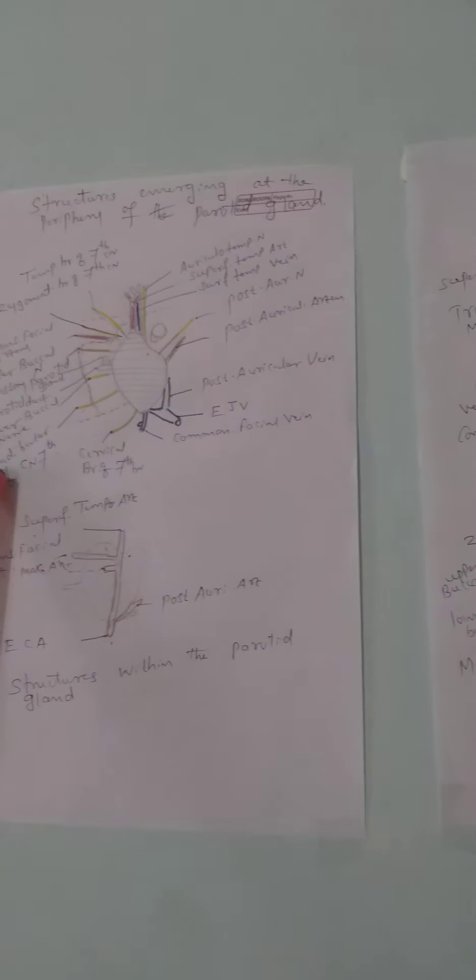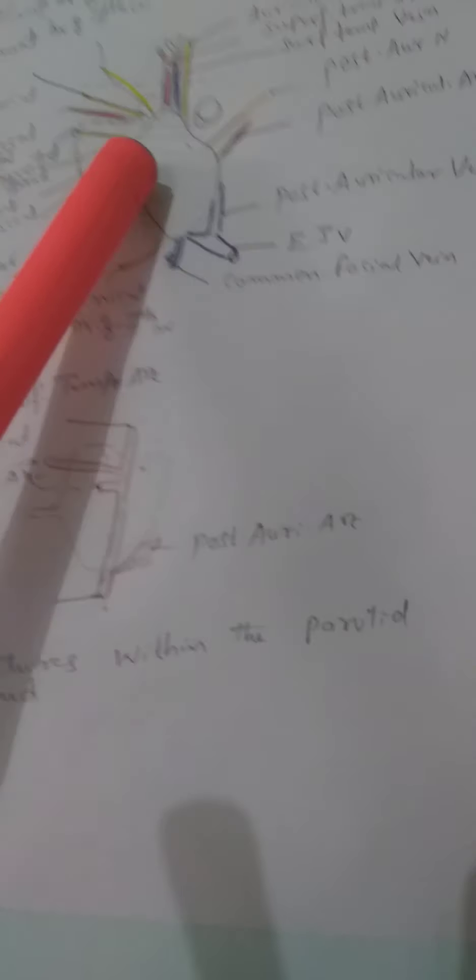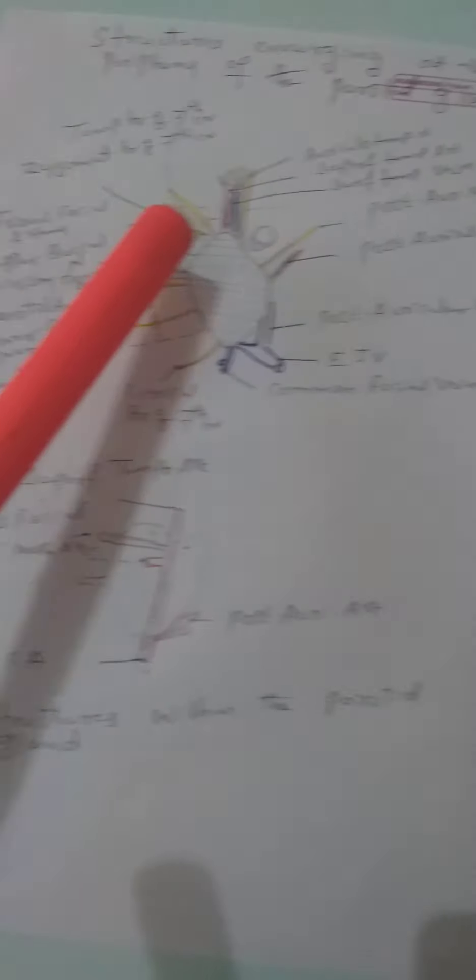The cervical branch and mandibular branch of the facial nerve emerge here, and the parotid duct is present. The parotid duct lies between the upper buccal branch superiorly and the lower buccal branch inferiorly. The accessory parotid gland is here. At the apex, you get the common facial vein and the external jugular vein. These are the surfaces and borders.